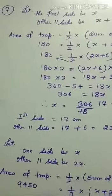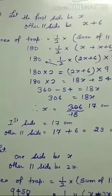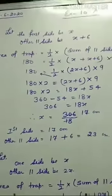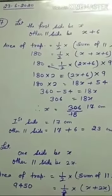The area of a trapezoid is 180 cm² and its height is 9 cm. One of the parallel sides is longer than the other by 6 cm.